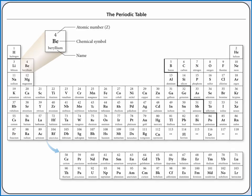This periodic table shows the atomic number at the top, the chemical symbol in the middle, and the name of the element underneath. Many periodic tables will also include the atomic mass for an element.